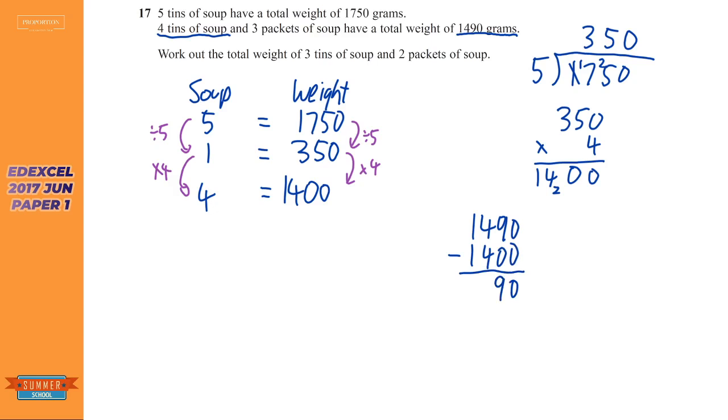And so three packets of soup. So three packets. So really, I should put tins just to make it really clear. So packets of soup. So three packets of soup will then be what's left over, which is 90.